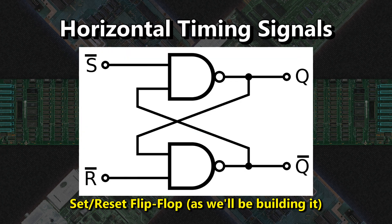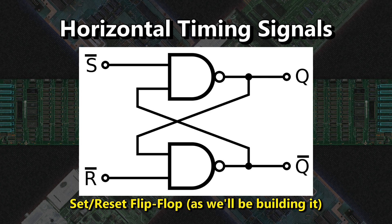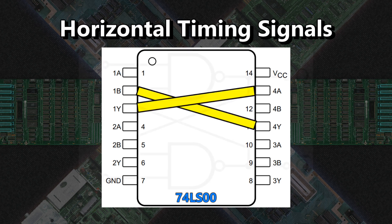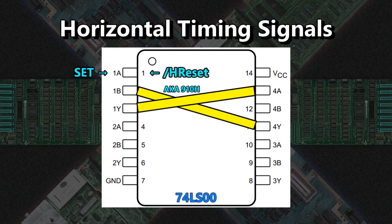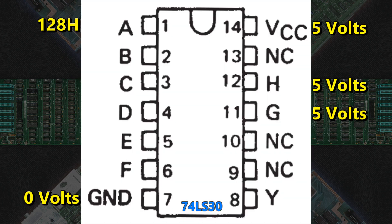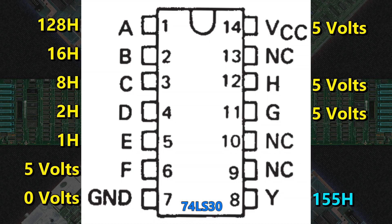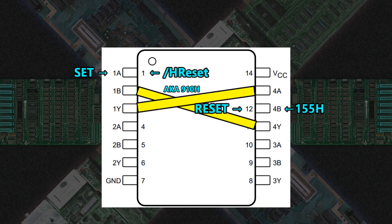But how do we trigger something to start and stop at specific times? We use what's called a set-reset flip-flop, or SR for short. This has two inputs — set and reset — and two complementary outputs. When you trigger set, it turns the flip-flop on; trigger reset, and it turns it off. If it's already set, setting it again doesn't do anything, and likewise for reset. The cheapest way to make an SR flip-flop is with the 74LS00 NAND with two gates cross-circuited. The set condition is not H-Reset. We make the reset condition — 155 — by pulling 128, 16, 8, 2, and 1 into another 74LS30. That output goes into reset of our SR, and the SR's outputs are H-blank and not H-blank, both of which we'll be using.